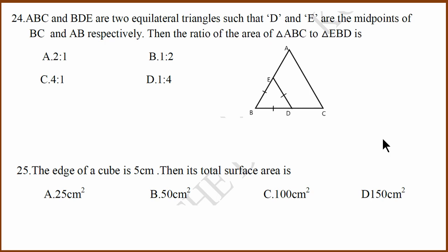They have asked us to find the ratio of the big triangle to small triangle, and they have told that D and E are midpoints. It is proportional to the ratio of the sides. The ratio of the sides, AB square by EB square. This is 2 by 1 because E is at the midpoint. Therefore that will be 4, which means the ratio is 4 is to 1.